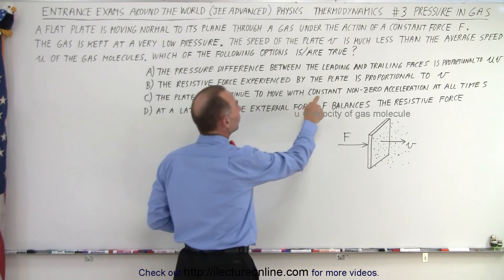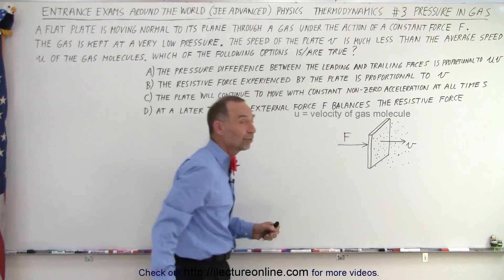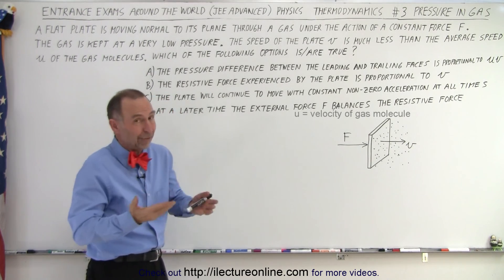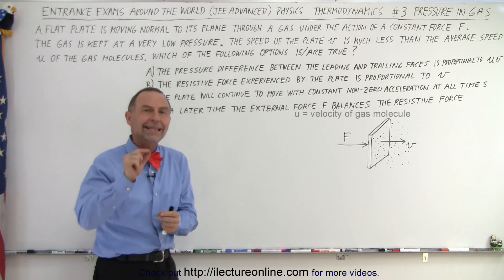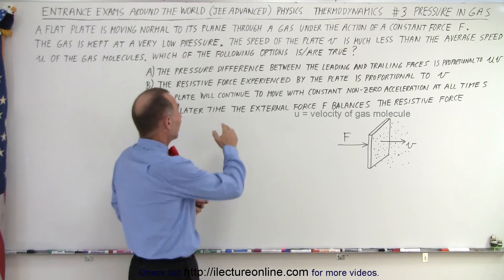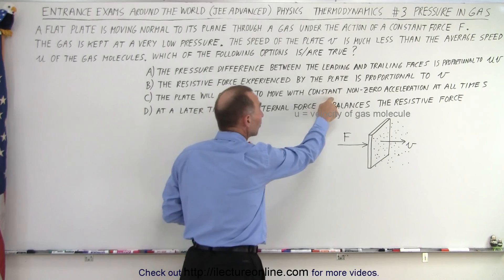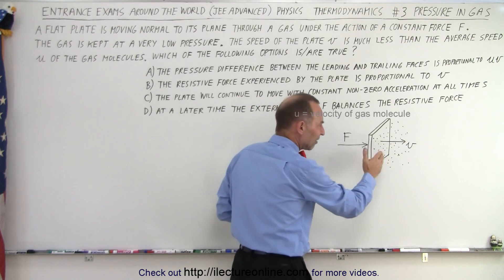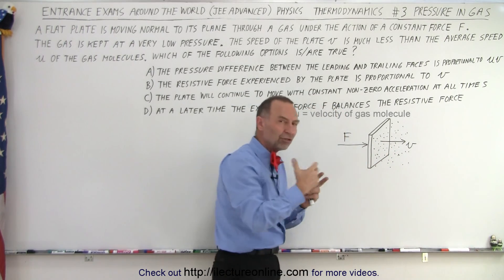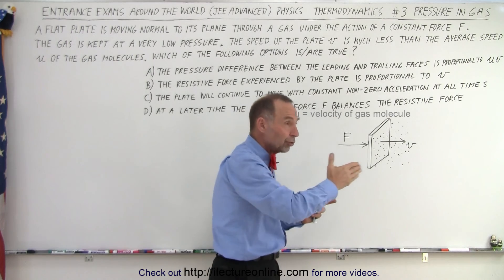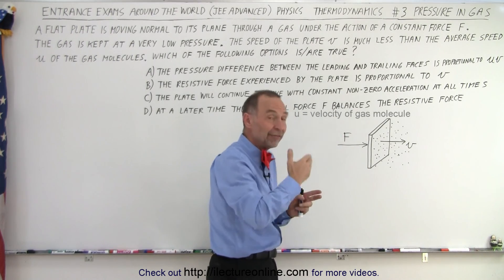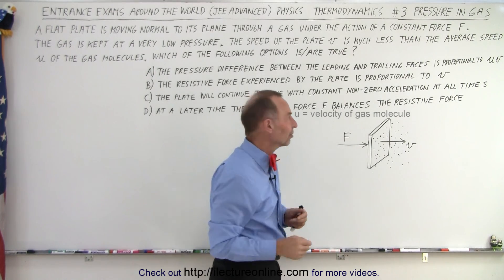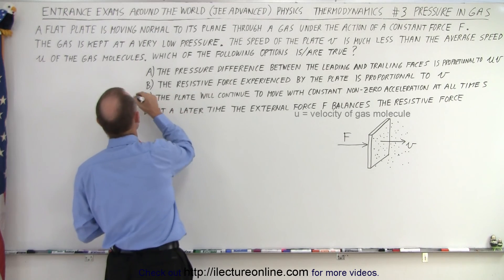Let's look at C. The plate will continue to move with constant non-zero acceleration at all times. Typically when a force is applied to an object it will accelerate, F equals MA. But of course we mean the net force. So if it will continue to move with constant acceleration, that means the net force never changes. But as the plate moves through the gas faster and faster, more pressure will build up because you're pushing through the gas and the pressure of the gas will push back. The faster you move through the gas, the greater the pressure and therefore the net force will not be constant. So that means C cannot be true.